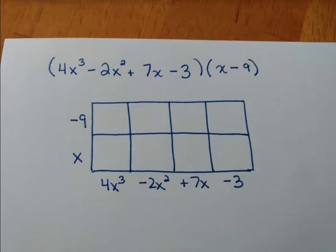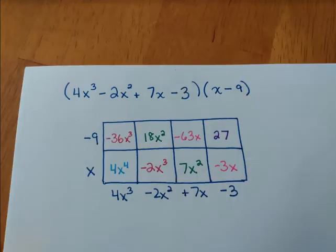So this first corner box is going to be 4x³ times x. This top box up here is 4x³ times negative 9. And so on to fill in the rest of the box. If you'd like to, you can go ahead and pause right now and fill in your own box and then check to see if you got it. So here we go. There's the end result. All of the boxes are filled in with some pretty colors.